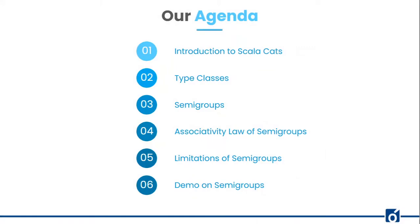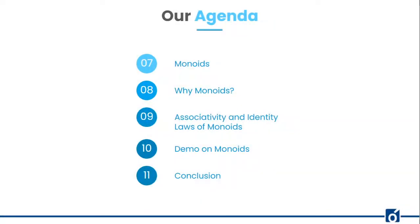Let's talk about this session's agenda first. We will start with an introduction of Cats and then talk about what type classes are and their components. Then we will study two of the core type classes of Cats — Semigroups and Monoids — covering Associativity Law, Limitations of Semigroups, a demo on Semigroups, then Monoids, why we need them, Associativity and Identity Laws, and a demo on Monoids.